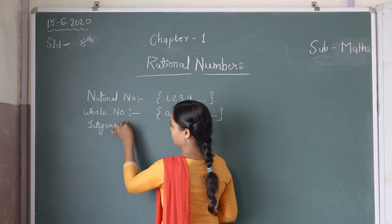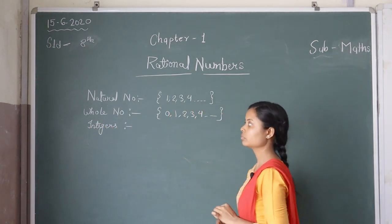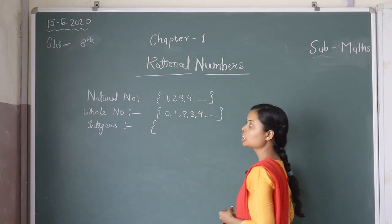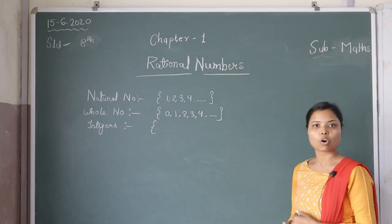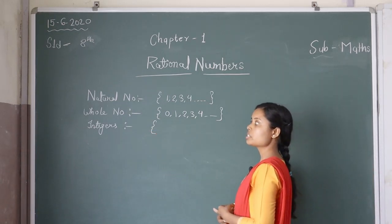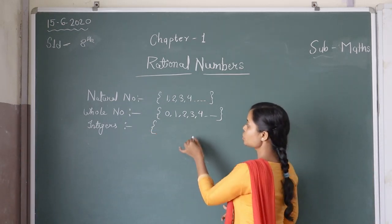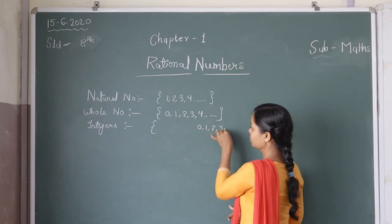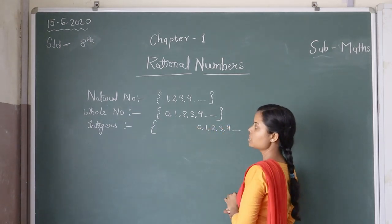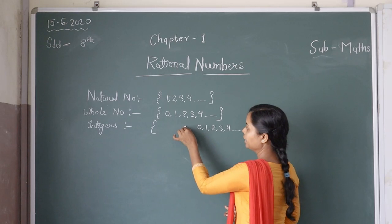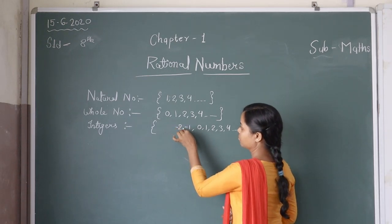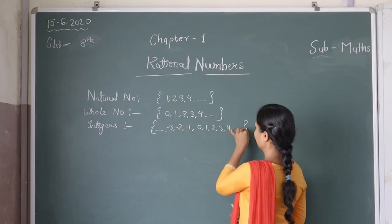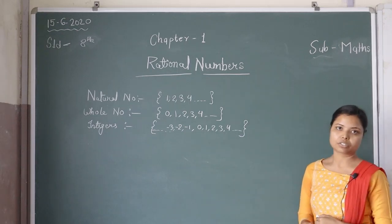Integers: the collection of numbers which contain whole numbers — and as you can see here, these are whole numbers — and negative numbers are called integers.